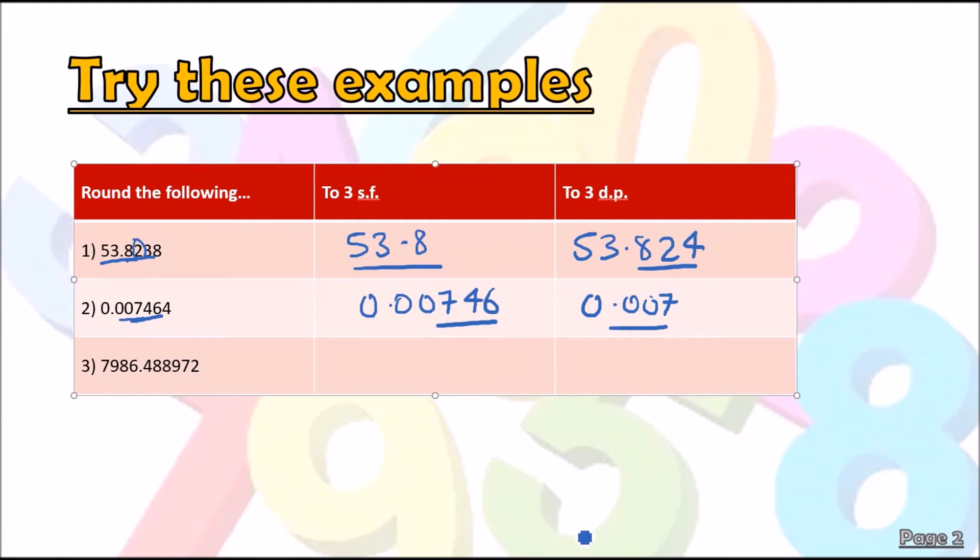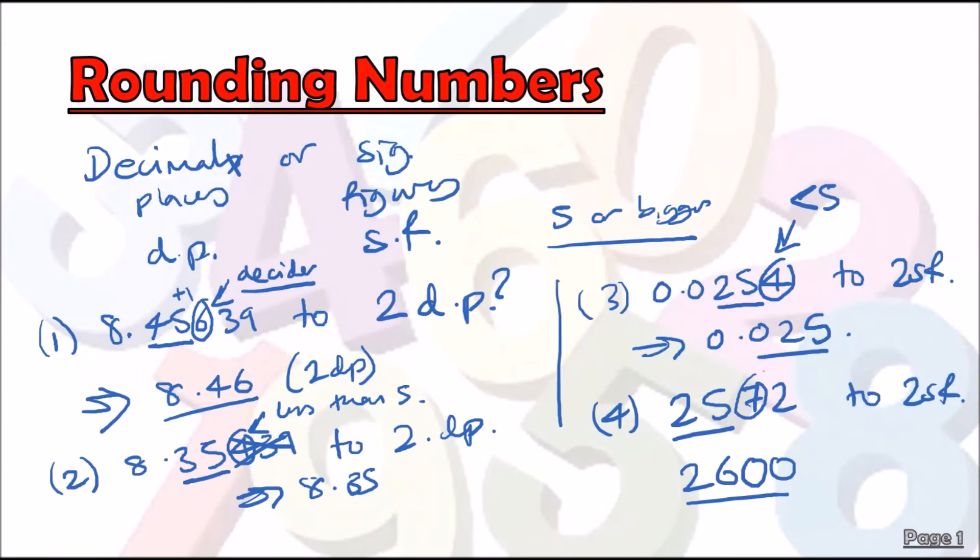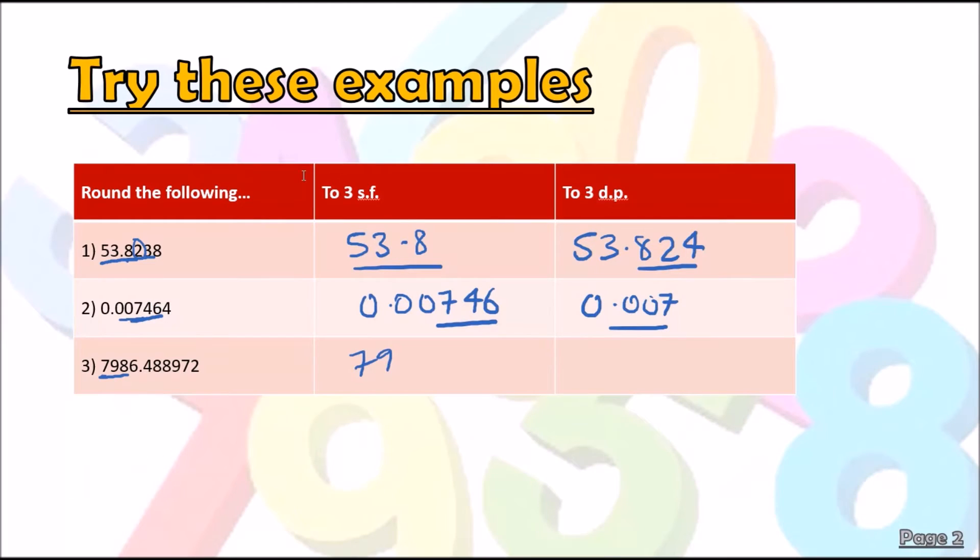So the first three significant figures. Again we look at the first three numbers. Six is the decider. Because it's bigger than five, hence we round 798 to 799. We stick in a nice zero because it's four digits. So 7990.